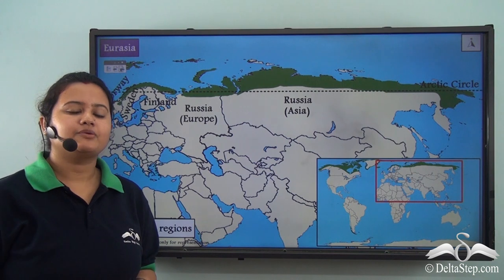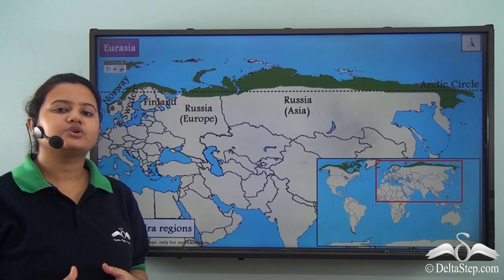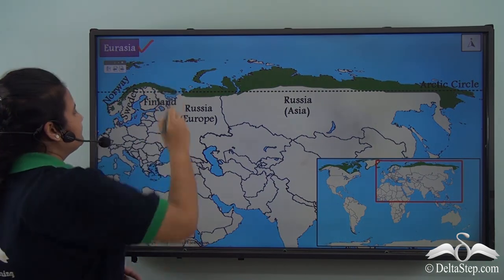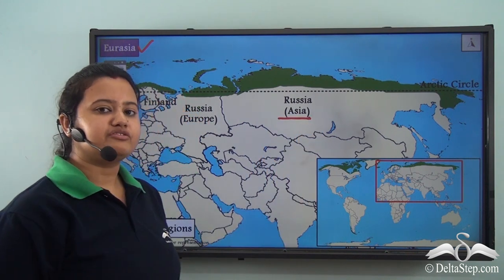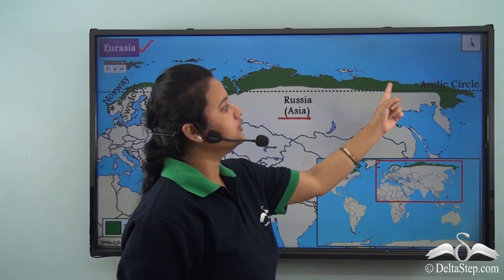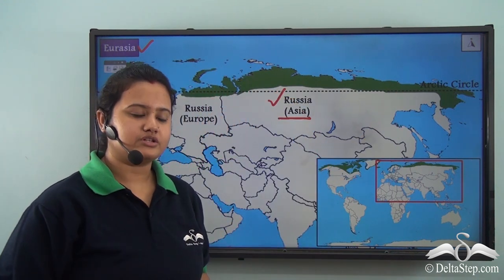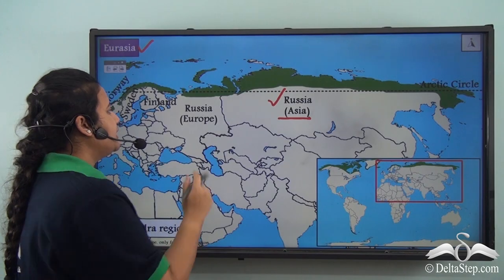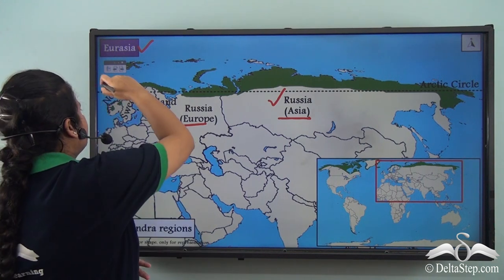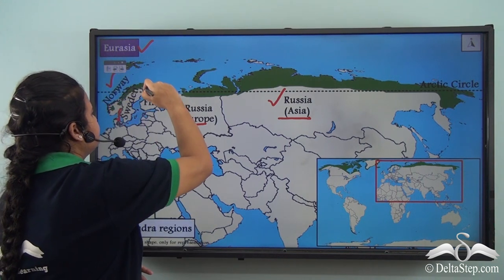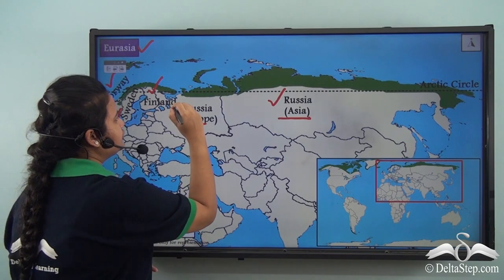Tundra biome also exists in the northern coastal fringes of Europe and Asia, together known as Eurasia. In Asia, it borders the entire northern coast of Russia, which is the largest country in the world. In Europe, it exists in the Scandinavian countries like Norway, Sweden, Finland, etc., and it is also found in the northern coast of European Russia.